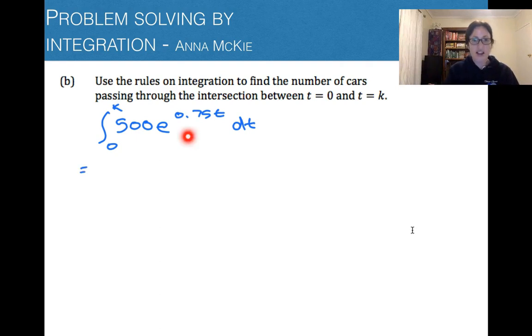So integrating an e function, you copy and paste and you put it 1 over this coefficient of t here. So I'm going to have 1 over 0.75, I've got square brackets, multiplied by the function, 500e to the power of 0.75t, close the square brackets between k and 0.